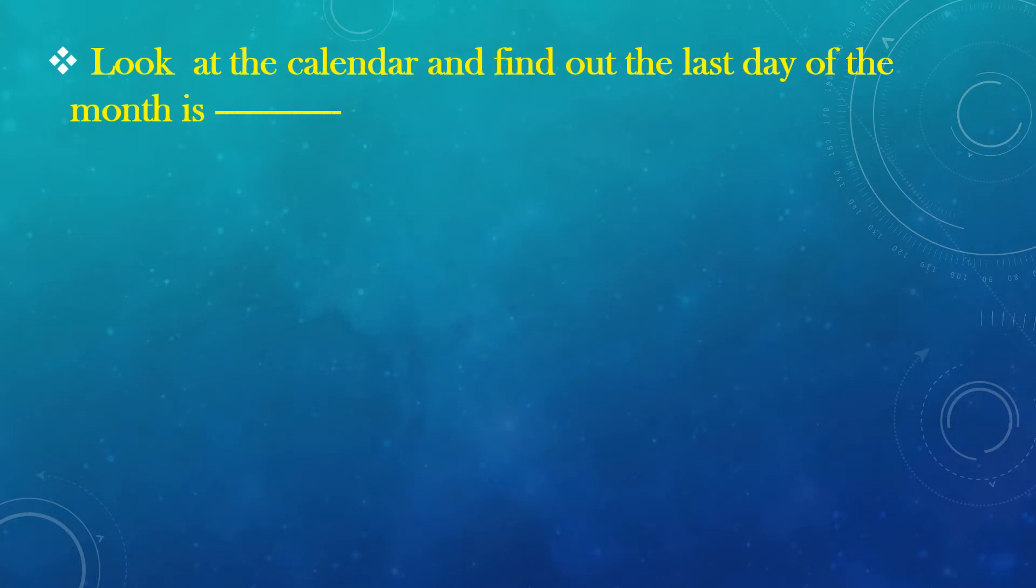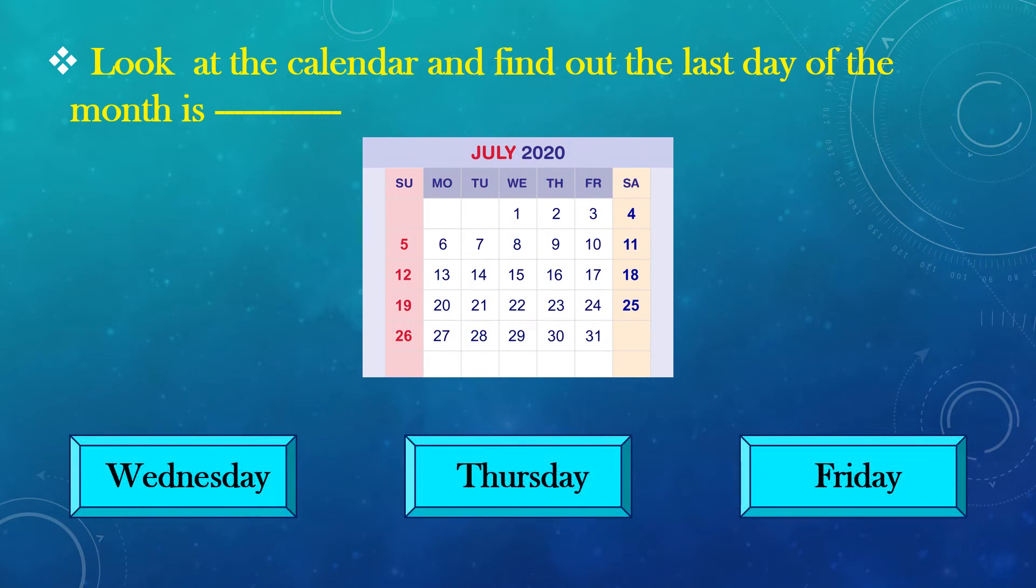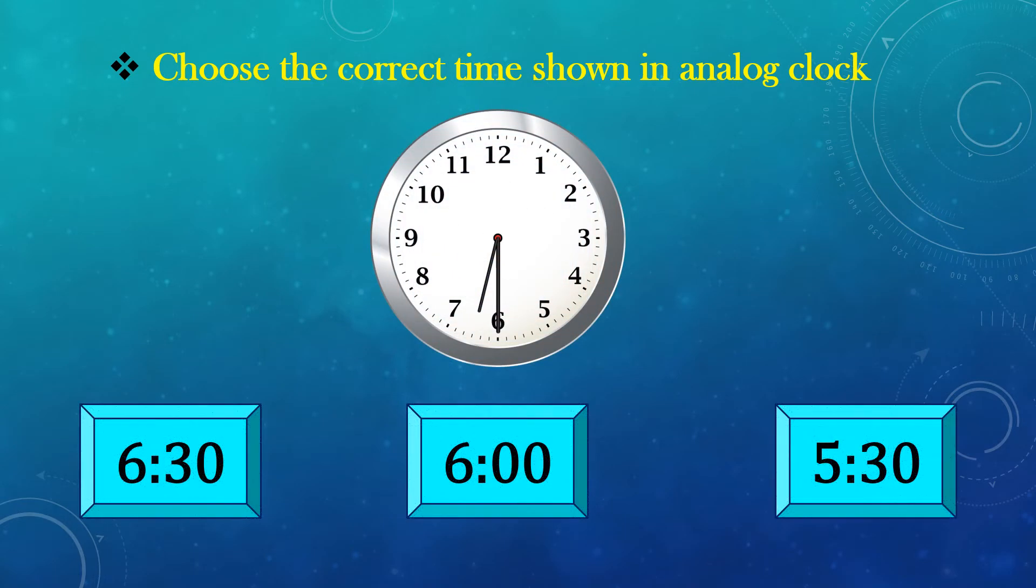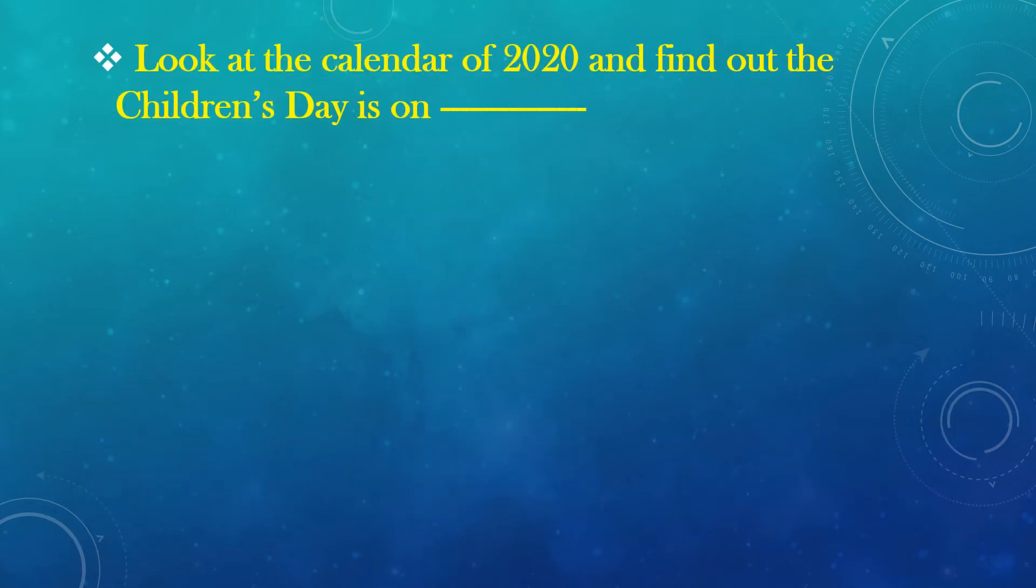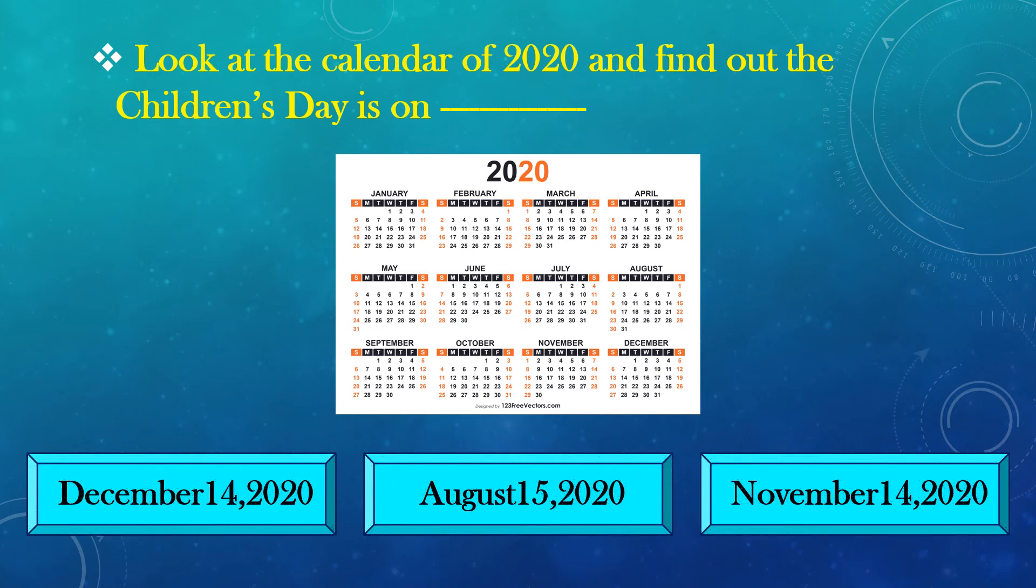Look at the calendar and find out the last day of the month is ___. The answer is 6:30. Look at the calendar of 2020 and find out the children's day is on. The answer is November 4th, 2020.